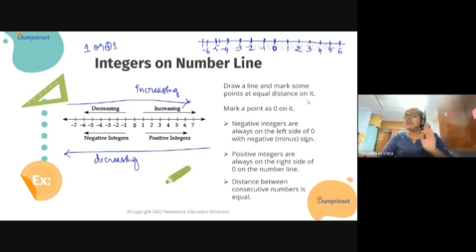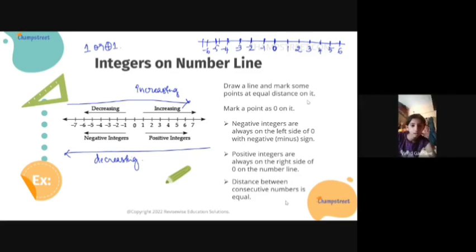Negative integers are always on the left side of zero and positive integers are always on the right side of zero on the number line. Distance between consecutive numbers is equal. Shiteja, did you hear everything right?